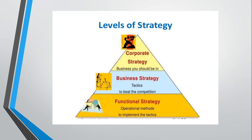Now let's look at the levels of strategy. First is corporate strategy, which is essentially about what business you should be in — it is the overall strategy of an organization and decides what direction you are heading in. Then comes business strategy, which is about tactics to beat the competition. Once you have decided in which sector you will function, you need to be very prudently conscious of the competition you are facing. Finally, there is functional strategy, which involves operational methods to implement the tactics, and it is delegated down to the middle level and lower management of an organization.